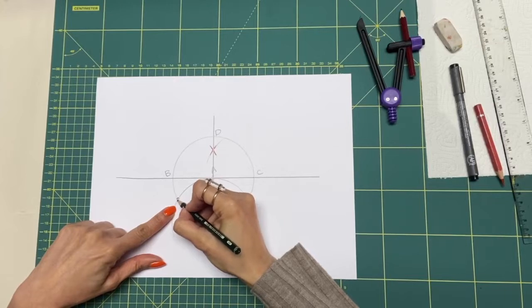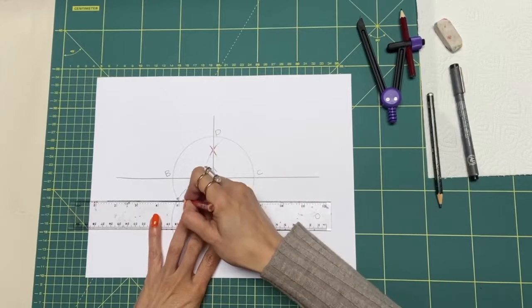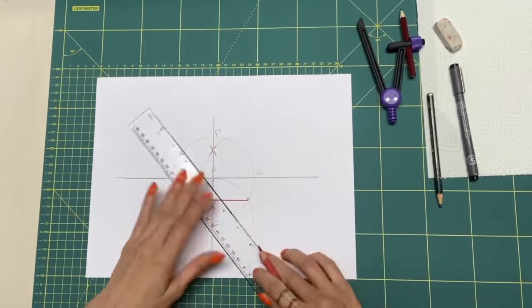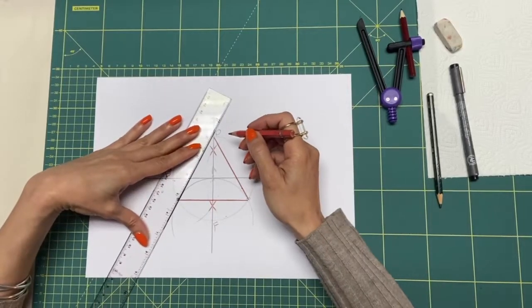We have two new points on the circumference. Attach these two new points and from these two new points to point D. Here is our perfect triangle.